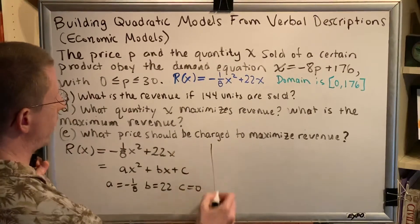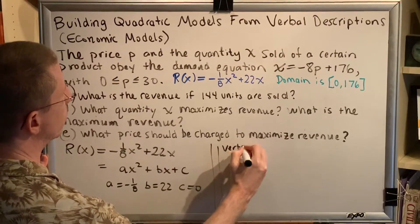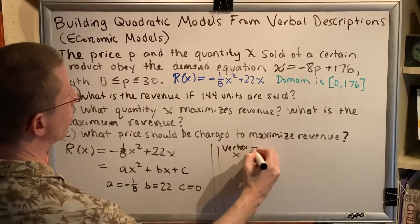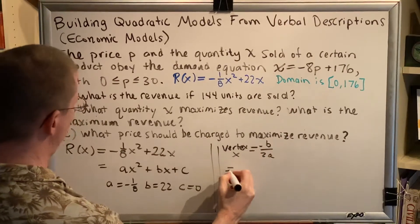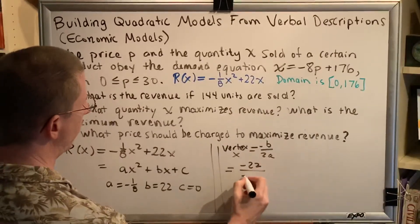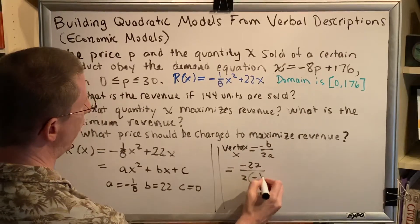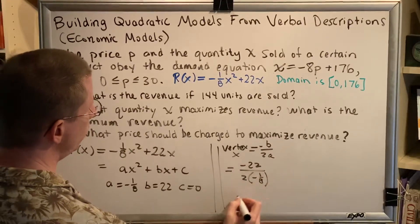All right. Let's plug into our vertex formula. Our vertex X is equal to opposite B over 2A, which in this case is going to be negative 22 divided by 2 times negative 1/8.